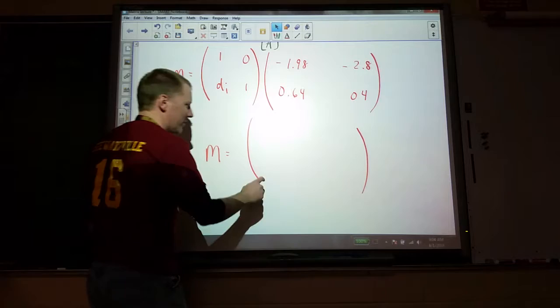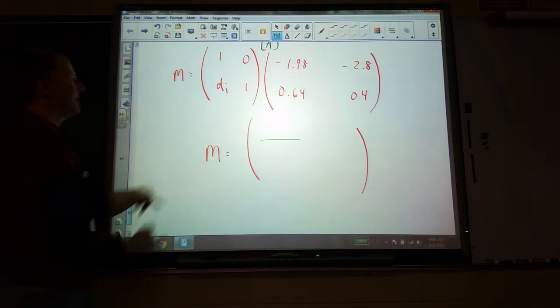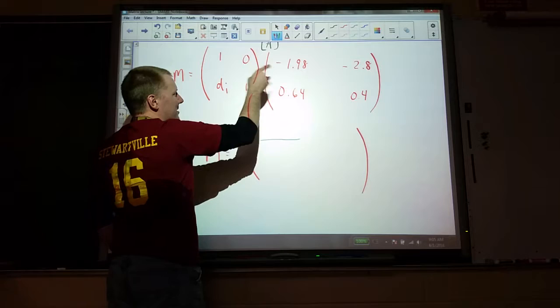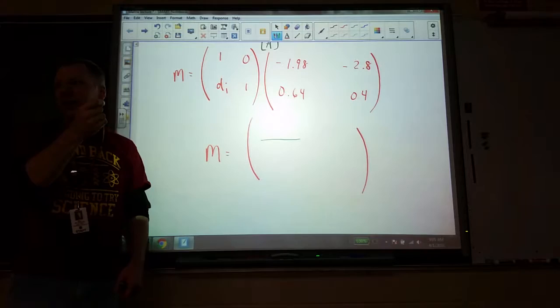The way to multiply to figure out any particular spot, so if I want, for example, the upper left, I take the upper row of my first matrix, the one and the zero, and I tilt that or transcribe it into vertical, and I multiply it by these two. So the one by this one, the zero by this, and then I add the two together.